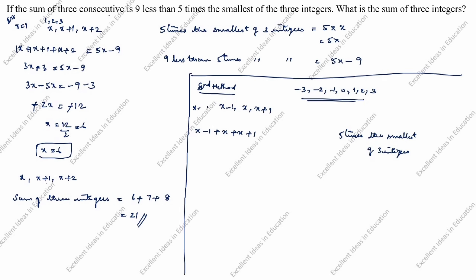For example, we take x equal to 2: 2 minus 1 is 1, 2, and 2 plus 1 is 3. Which one is smallest? x minus 1 is the smallest. So 5 times the smallest is 5 times x minus 1, which we write as 5x minus 5. And 9 less than that is 5x minus 5 minus 9.